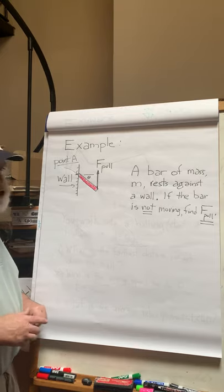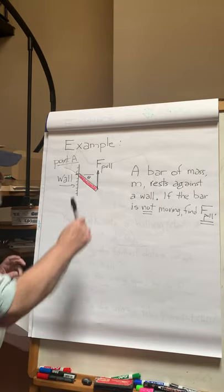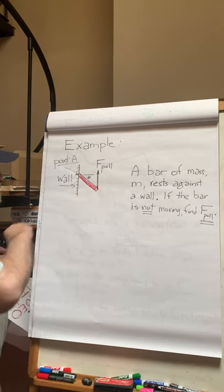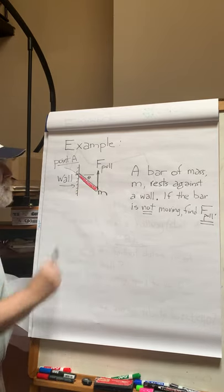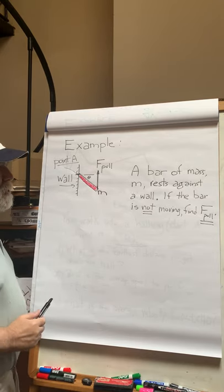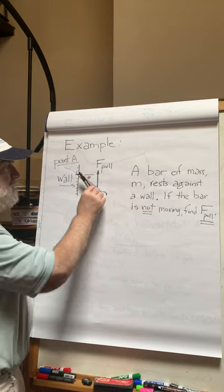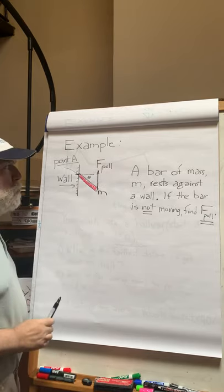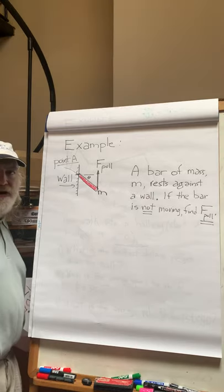It's like 50%. So we have some kind of bar here of mass M and it rests against the wall. If the bar is not moving, so there's no rotation, no translation up and down the wall, what is our F-pull that we provide?